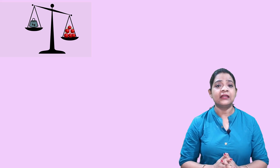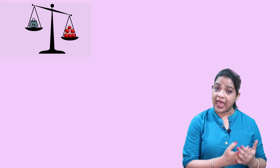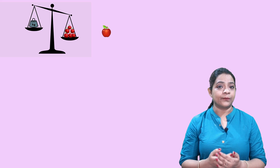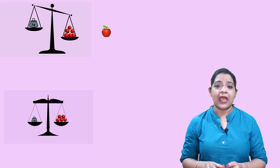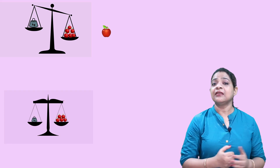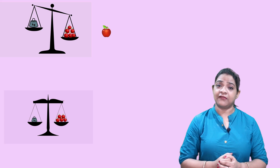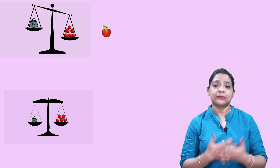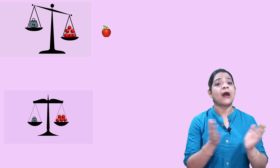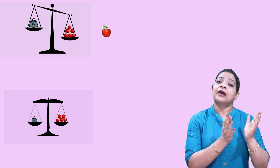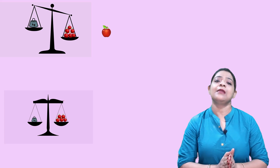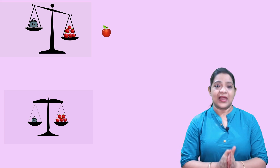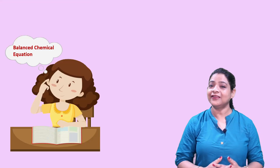The first figure shows that the scale is not balanced as it is not giving us 1 kg apple — it is in excess of 1 kg apple. So if we remove 1 apple from the scale, then the second figure shows that the scale is perfectly balanced. If we try to understand what is balanced in terms of a scale, we see that the right hand side and the left hand side should be exactly at the same level. So we say that it is balanced. Now, what does balancing a chemical equation mean?